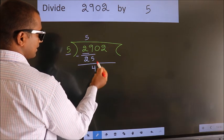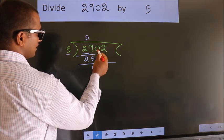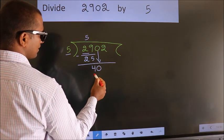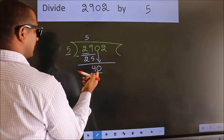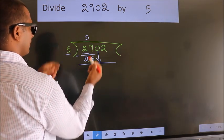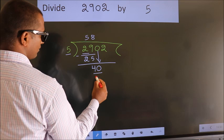After this, bring down the beside number. So 0 down, making 40. When do we get 40 in the 5 times table? 5 times 8 equals 40.